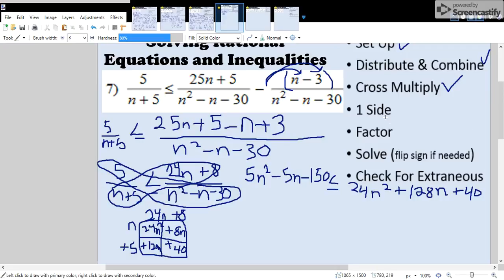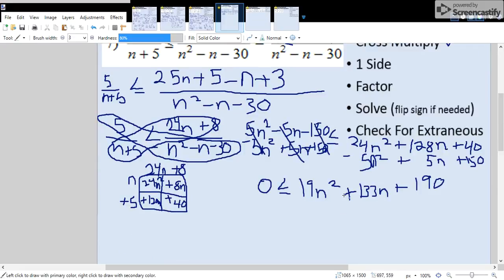Step 4, you're going to move everything to one side. I would move it all to the right side on this one. Step 5, you're going to have your lead term positive. So we'll subtract 5n squared, add 5n, and then add 150 to both sides of the less than or equal to sign. So now you have 0 is less than or equal to 19n squared plus 133n plus 190.